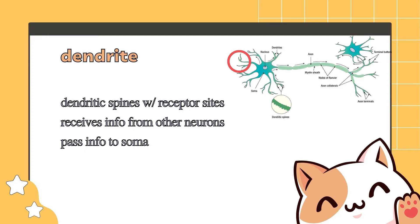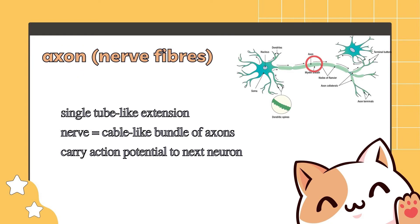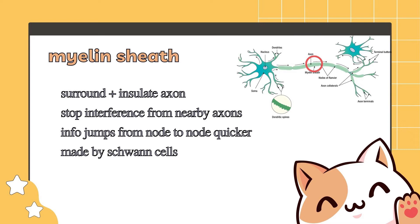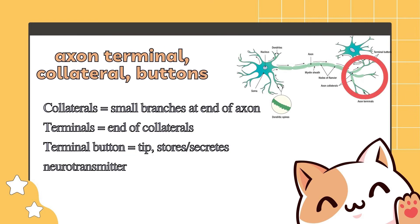Dendritic spines with receptor sites receive chemical messengers called neurotransmitters, which are converted to electrical signals. The dendrites pass information to the soma, which is the cell body that houses the nucleus. It collects, integrates and processes information, passing it to the axon, and also produces neurotransmitters. Axons transmit action potentials away from the cell body. A cable-like bundle of multiple axons is called a nerve. On the axon we have myelin sheaths — insulators that surround and protect the axon, minimizing interference from nearby axons and speeding up the impulse conduction rate. The gaps between myelin sheaths are called nodes of Ranvier, which allow electrical impulses to jump from node to node quickly, speeding up transmission. Finally, we reach the axon terminal, composed of collaterals, terminals and terminal buttons. Terminal buttons store and secrete neurotransmitters into the synapse, which is a gap between the terminal and the dendrites of two adjacent neurons.